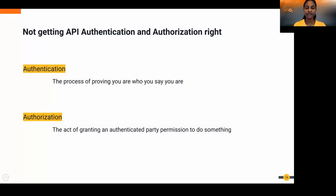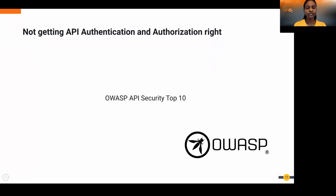Number three: not getting API authentication and authorization right. Authentication is the process of proving you are who you say you are; authorization is granting an authenticated party permission to do something. Many API security breaches occur because authentication and authorization are not implemented correctly — both the John Deere and Experian breaches involved a lack of proper authentication and authorization. The OWASP API Security Top 10, the most referenced list of API security threats, shows that close to 50% of all threats listed are related to improper authentication and authorization.